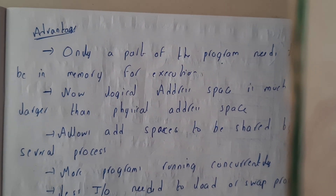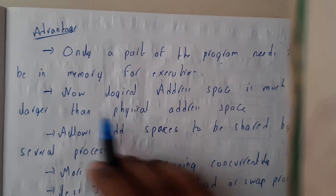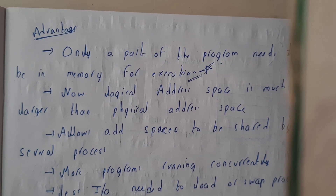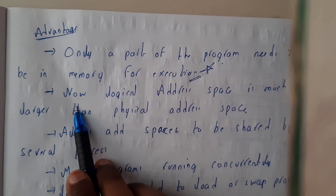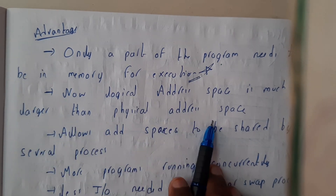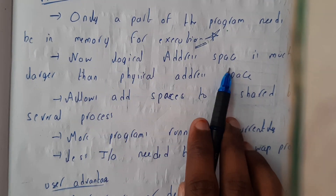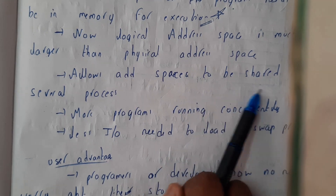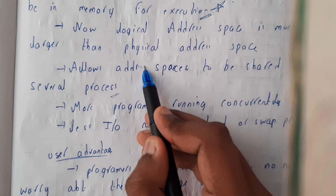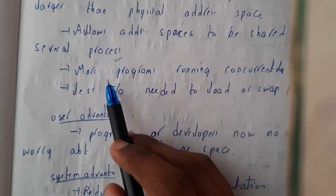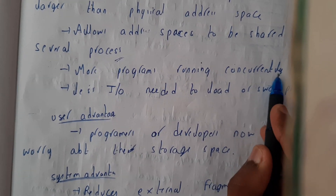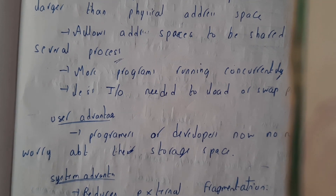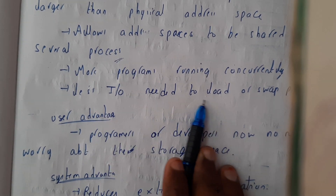Now let us go through a few advantages. Only a part of the program needs to be in memory for execution — this is one of the most important advantages of virtual memory. The logical address space is much larger than the physical address space because we have the virtual concept. It also allows address spaces to share several processes, and more programs can run concurrently because of the very large available size.